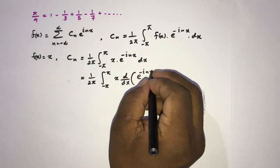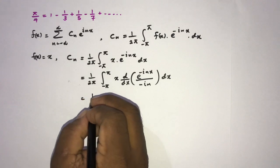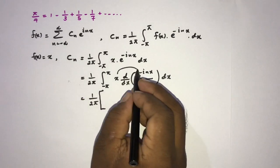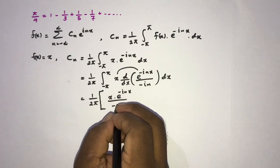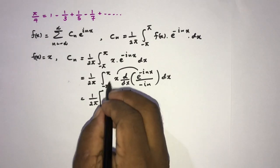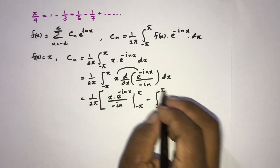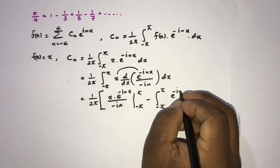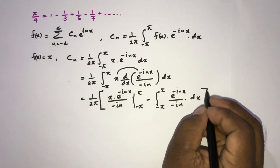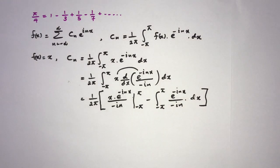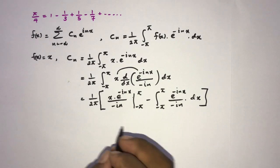So e to the minus inx over minus in, dx. Then 1 over 2π times the product of these two functions: x times e to the minus inx over minus in, evaluated from minus pi to pi, then minus the integral from minus pi to pi of e to the minus inx over minus in times the derivative of the first function, which is 1, dx.